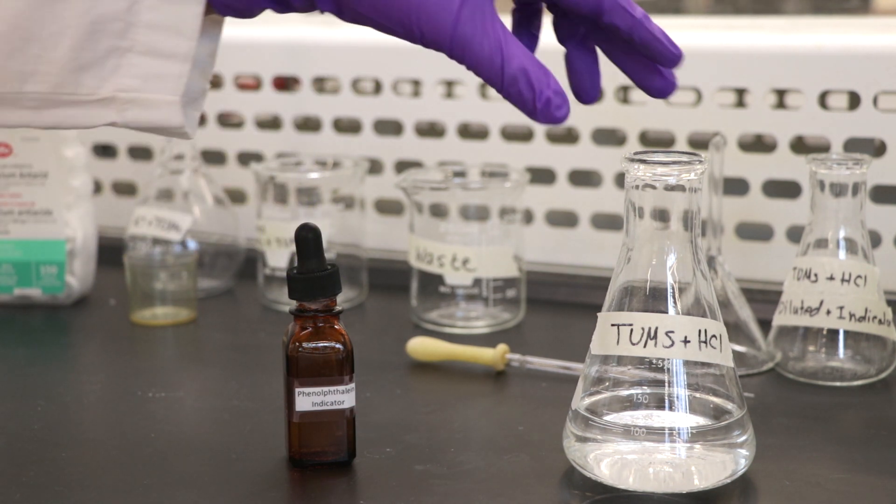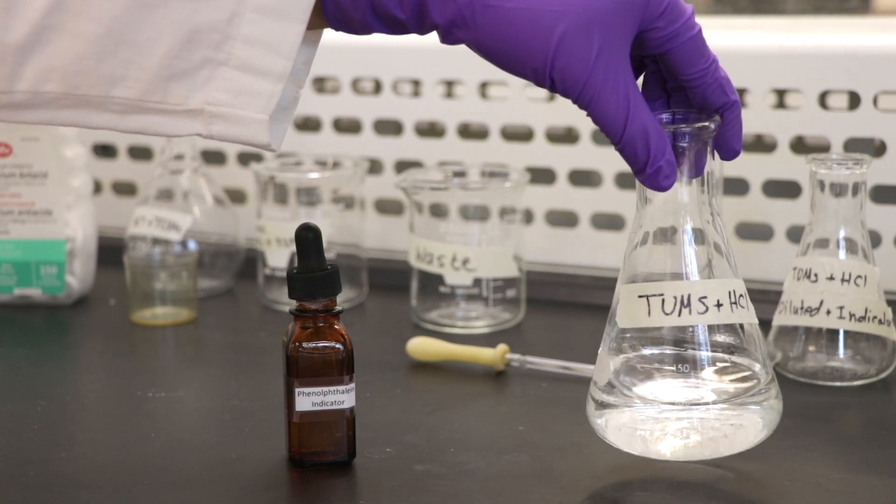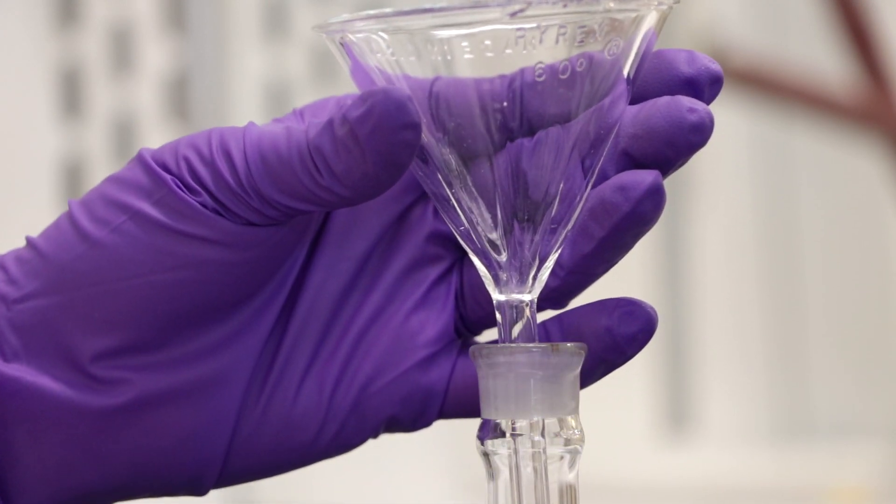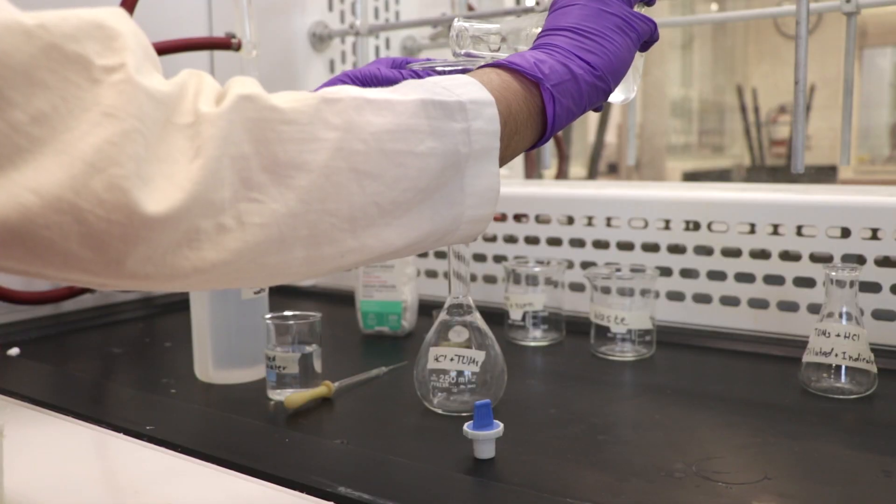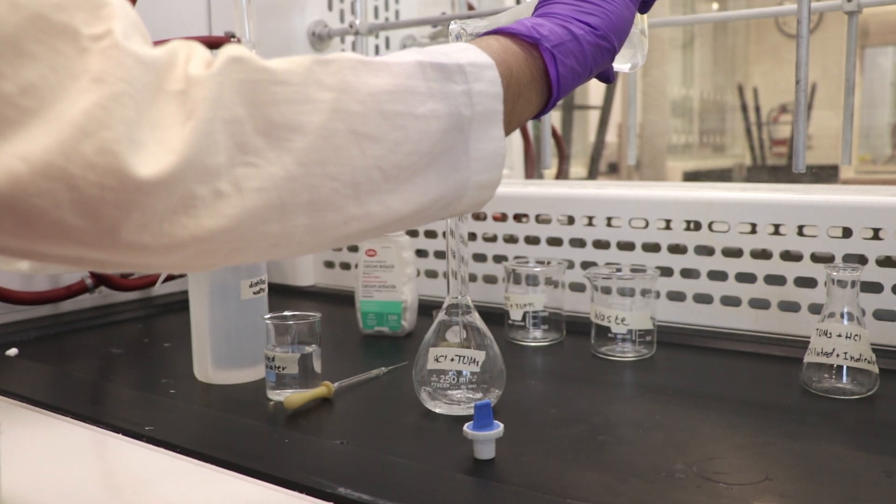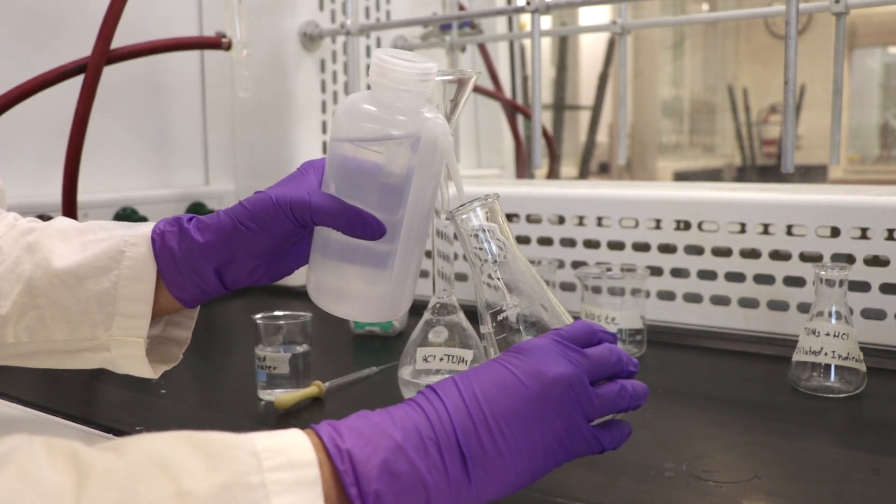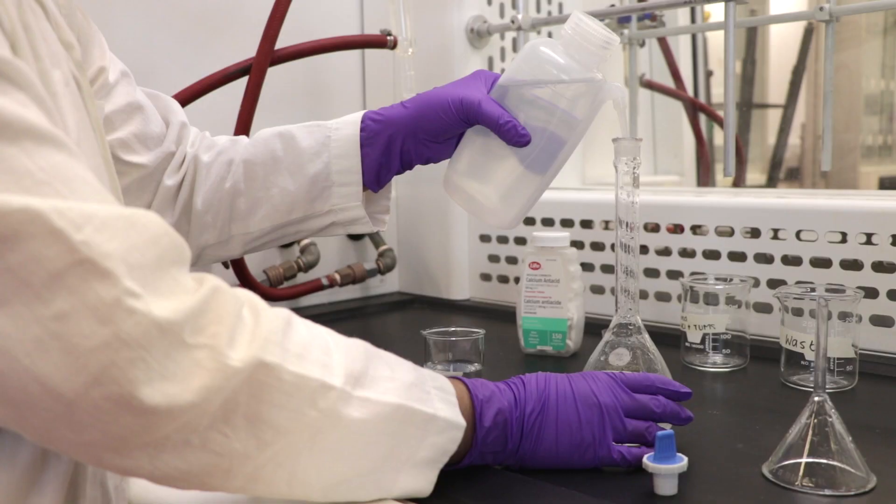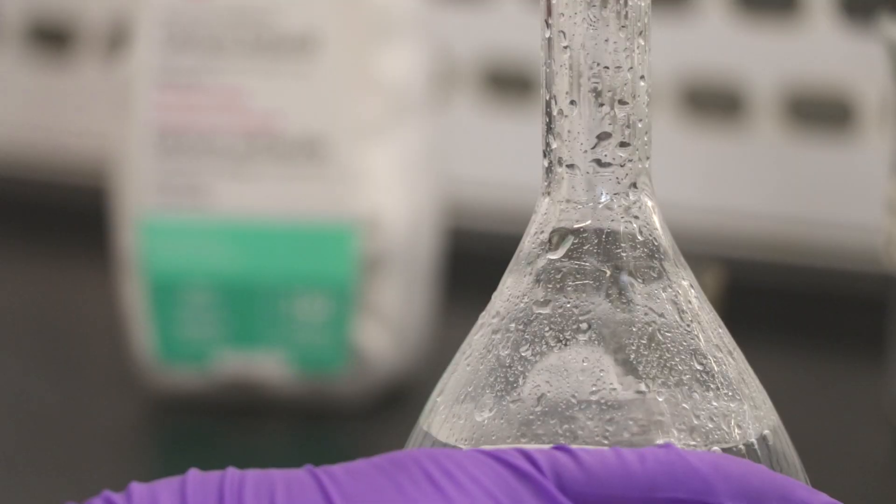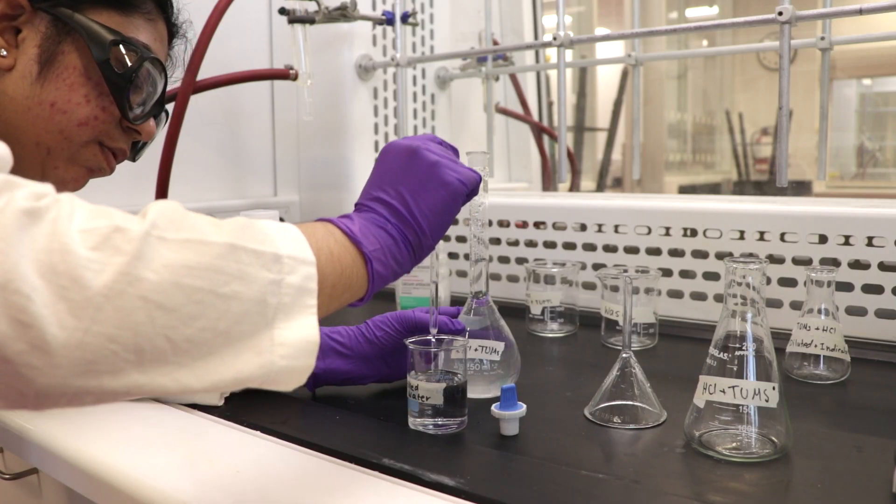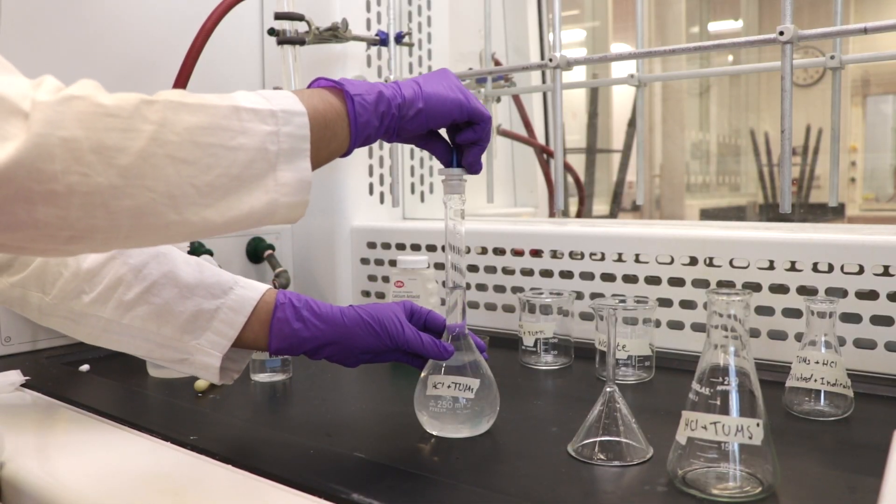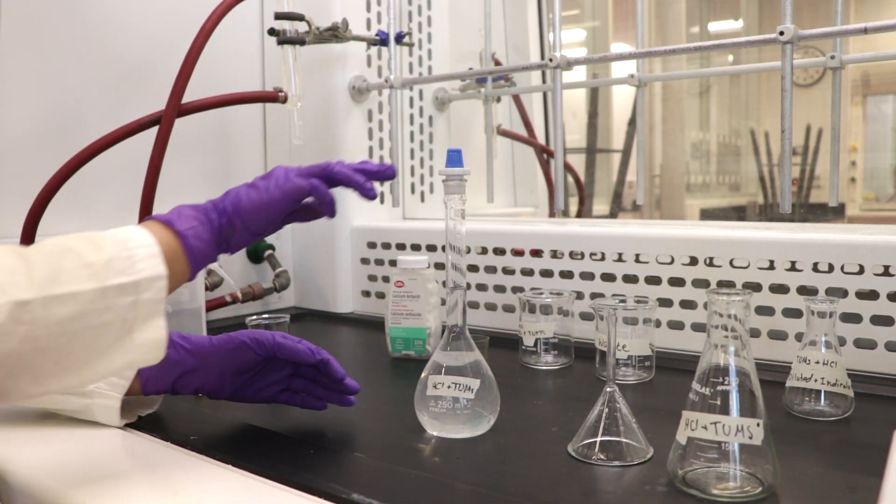Transfer the solution to a 250 milliliter volumetric flask. Make sure the funnel is lifted when you pour. Rinse the Erlenmeyer flask and the funnel with distilled water. Dilute the solution to the mark with distilled water. You may want to use a disposable pipette to make the bottom of the meniscus meet the mark. Place the stopper and twist. Invert the solution to mix.